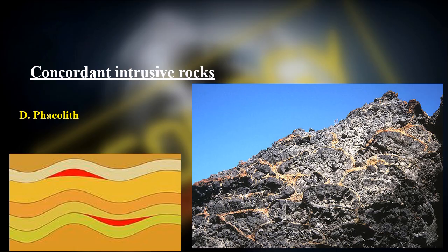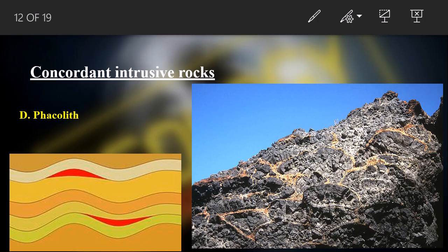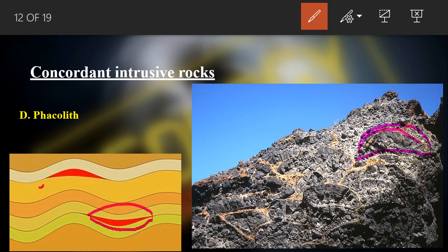Next we have phacoliths. Phacoliths are formed when lava is trapped in a fold — either at the crest position or the trough position of the fold. If the intrusion is along the fold in this way, we call it a phacolith.